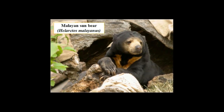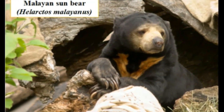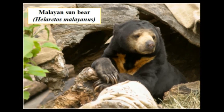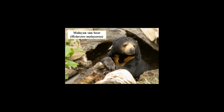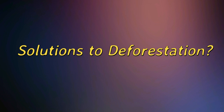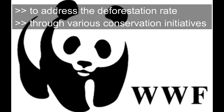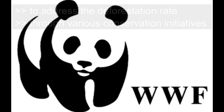In Malaysia, the Malayan Sun Bear is listed as vulnerable by the IUCN Red List 2008, threatened by habitat loss. Actions and measures are needed to reduce deforestation. Some solutions include replanting or reforestation, reducing paper usage, and law and regulations. Also, WWF Malaysia works closely with the Sarawak and Sabah governments to address the deforestation rate in both states through various conservation initiatives, including enhancing protected areas.